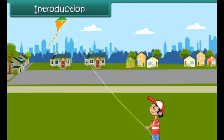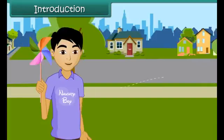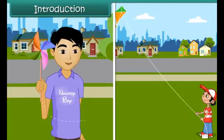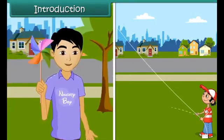This boy is flying a kite. The kite flies so high. How does it fly? The windmill moves due to movement of air, and so does the kite fly.